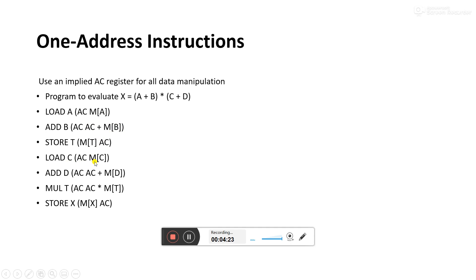Next, LOAD c stores the content of memory location c into the accumulator. Then ADD d adds d to the accumulator. At this point, the accumulator holds (c + d), and memory T holds (a + b). Then MUL T multiplies the accumulator value by memory T, storing the result in the accumulator. Finally, STORE x saves the result to memory location x. This is how one address instructions work.